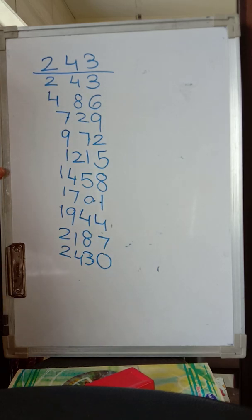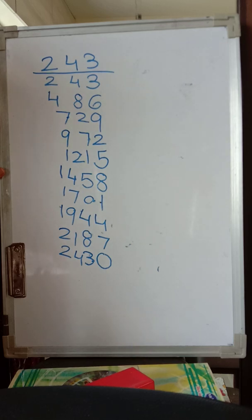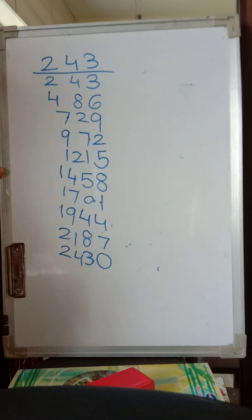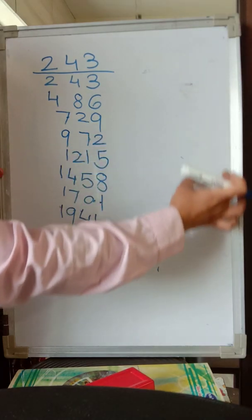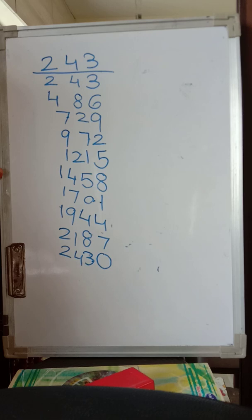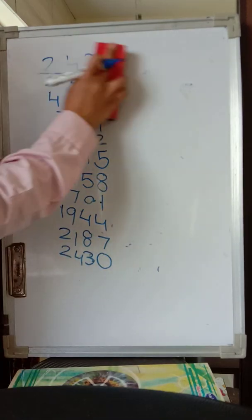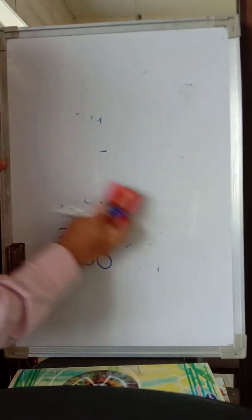I want you all to practice yourself with different 2-digit and 3-digit numbers. You can try with 12, 13, 14, 15 also — it goes very easy. Please do learn tables up till 20, as that will surely save your time while doing multiplication and division problems. Now there is one interesting thing related to this: for example, if the number is ending with 5.